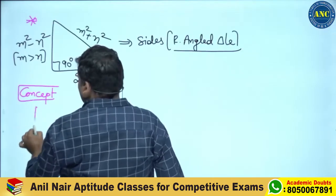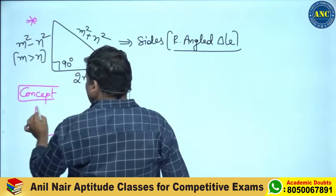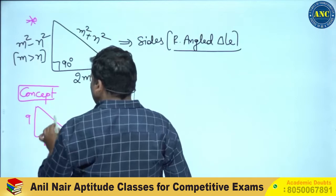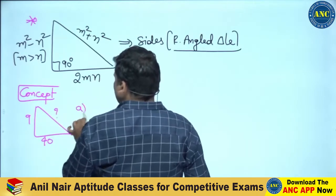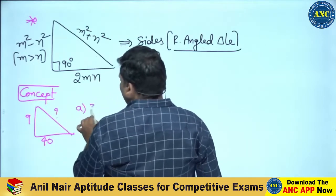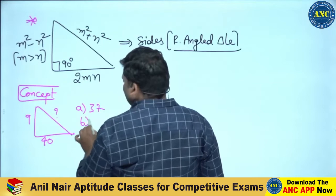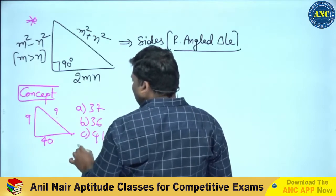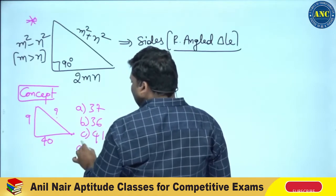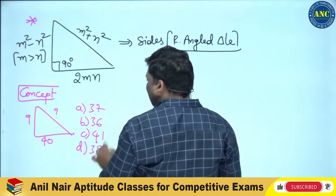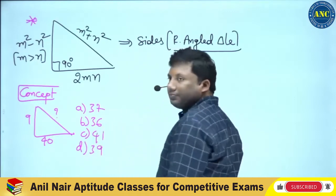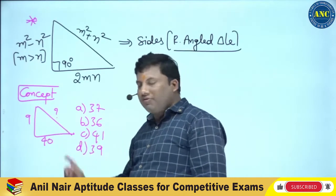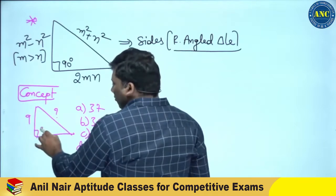Next concept: suppose two sides are given — 9 and 40 — and the third side is unknown. If the options are 37, 36, 41, and 39, which is the correct answer?